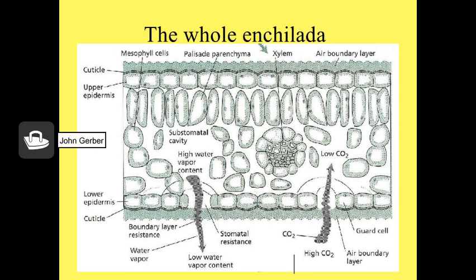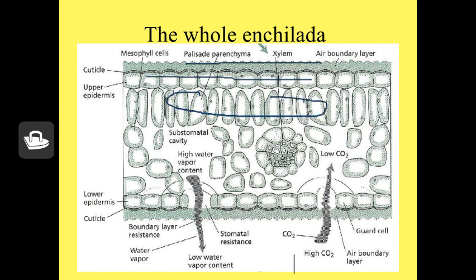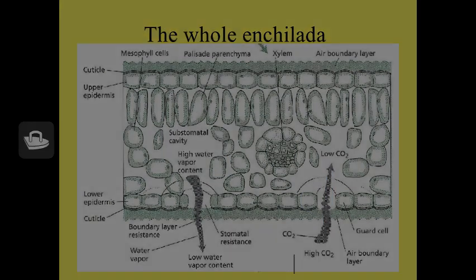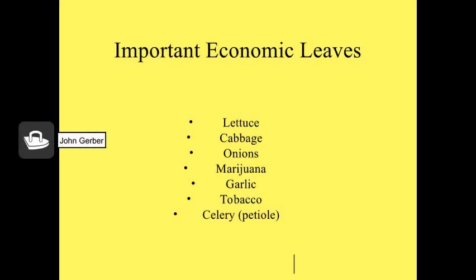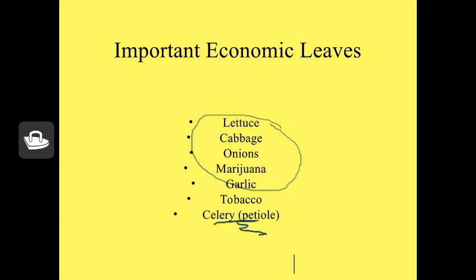Here's a nice cross-section of the leaf showing the upper epidermal cells and the waxy cuticle on top preventing water loss. You've got the palisade cells, the spongy mesophyll cells, the vascular bundles, and stomates with gas exchange going in and out. Remember, the leaf is composed of both a blade and a petiole. Most important vegetables use the blade, but in some cases it's the petiole — as in celery. That's a test question.